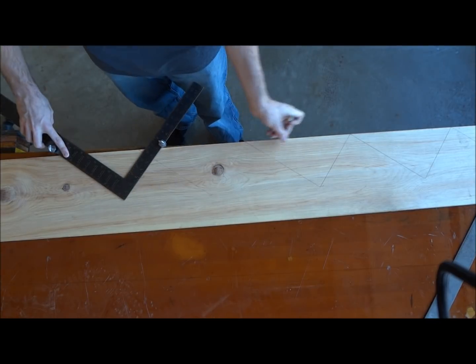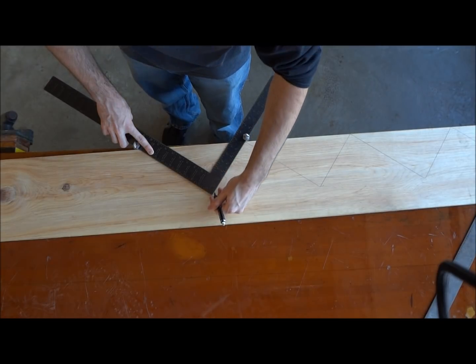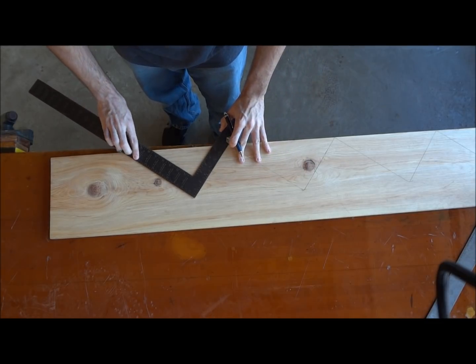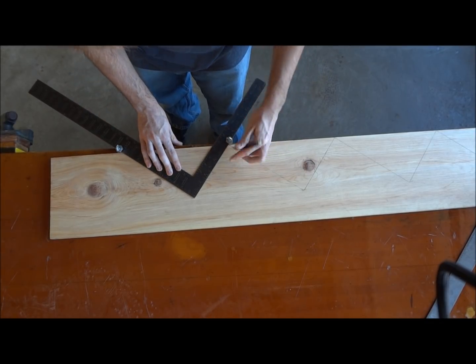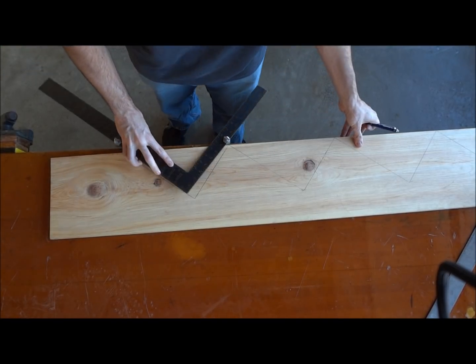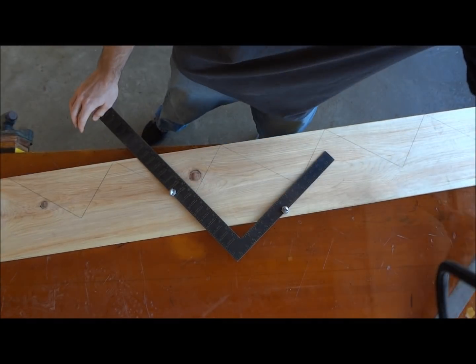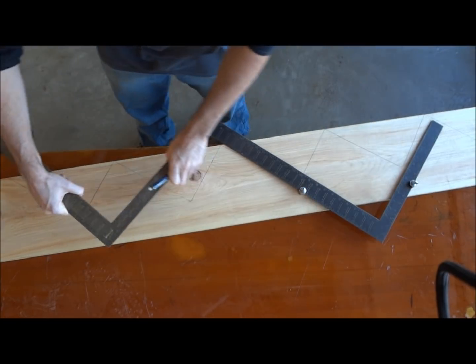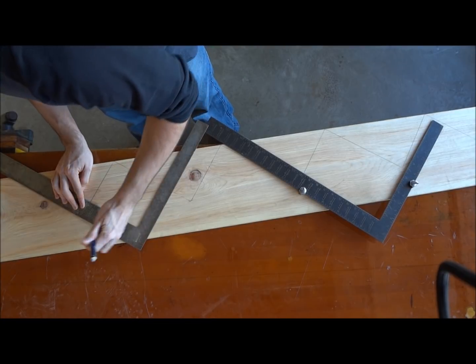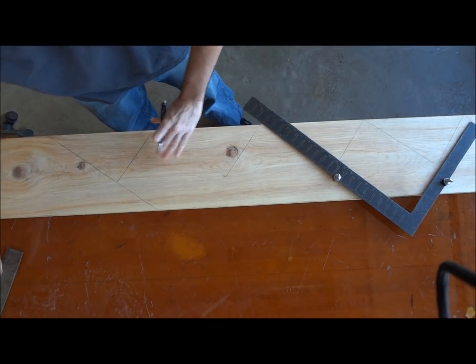1, 2, 3, 4, 5. Okay. And with the bottom, this will be the bottom of our stringer. So again, just like the top, I'm going to take a framing square, line up and draw the line across.